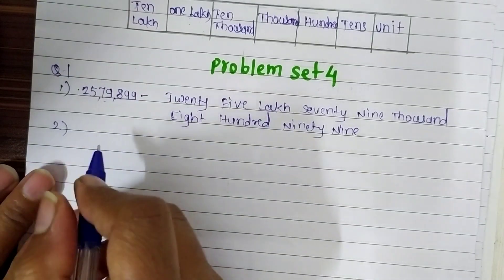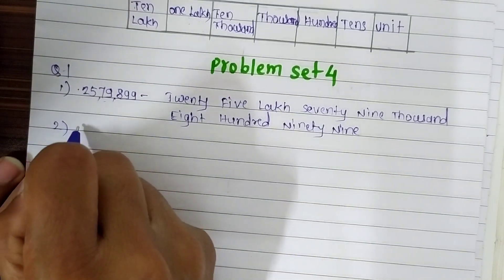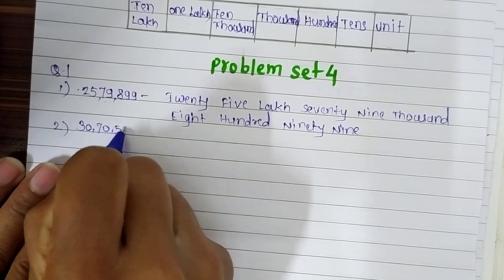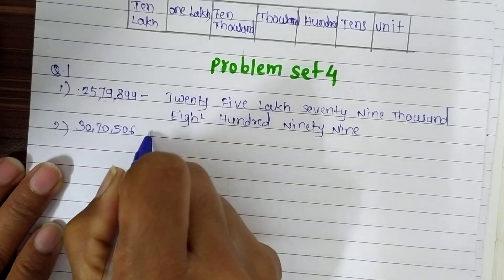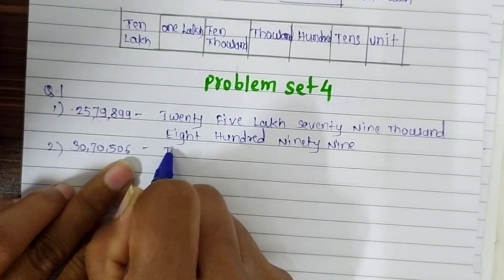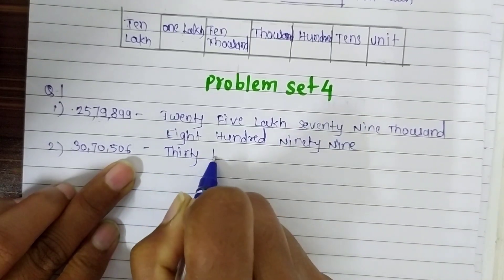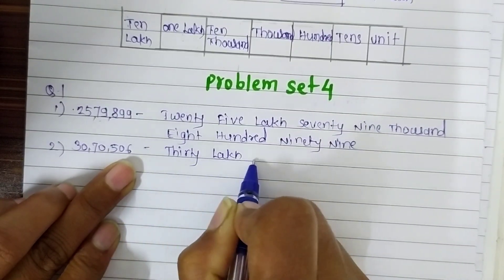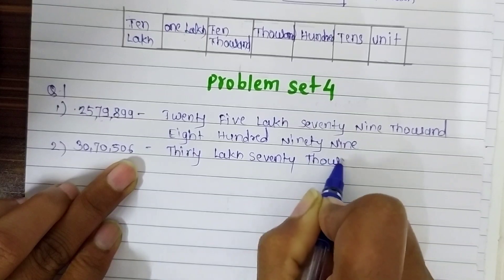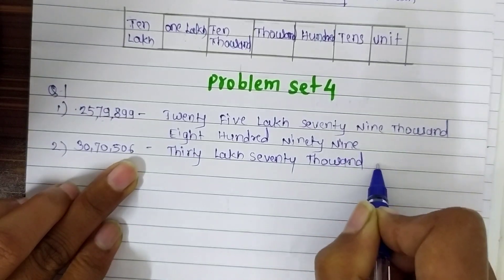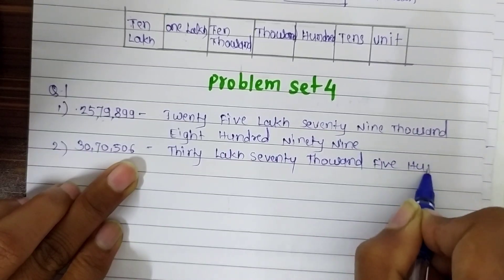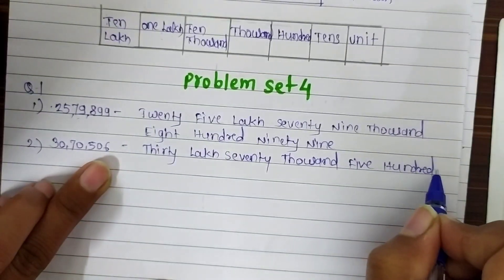The second question is: 30,70,506 — write it in words. The answer is: thirty lakh, seventy thousand, five hundred and six.